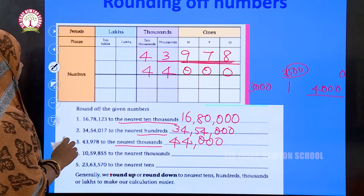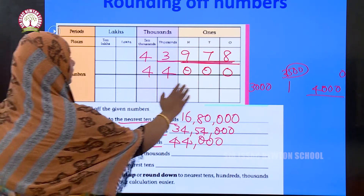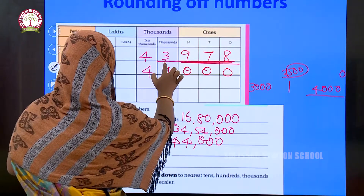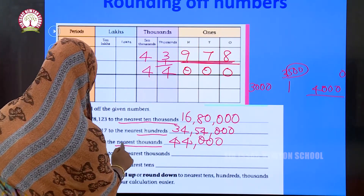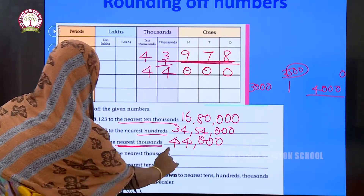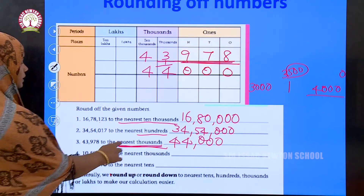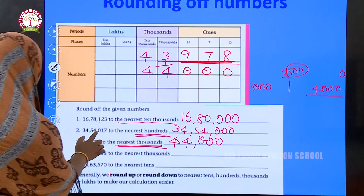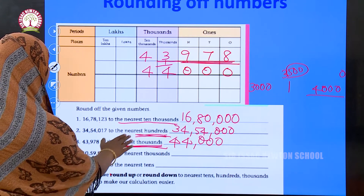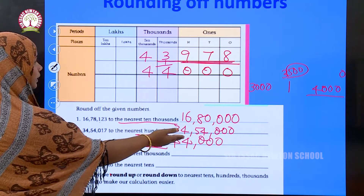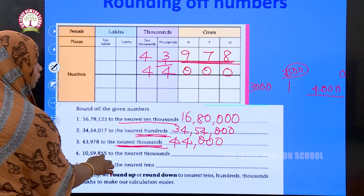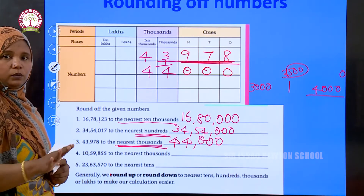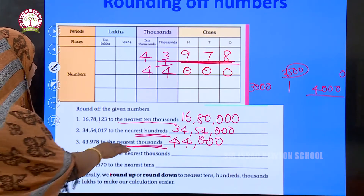The key idea is: when rounding up, add 1 to the place value being rounded to. For the nearest 1000, add 1 to the thousands place. For the nearest 100, add 1 to the hundreds place if rounding up. If rounding down, do not add anything.